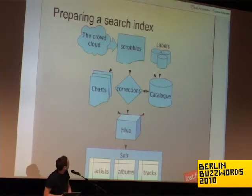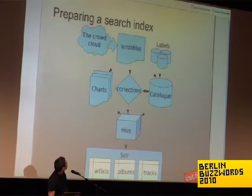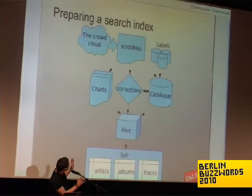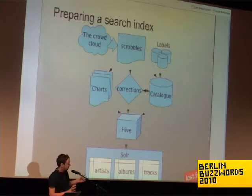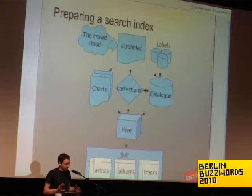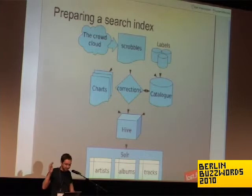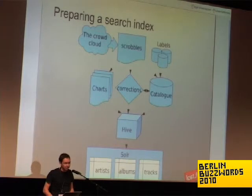This is a chart of the flow for building search indexes, which I work on. We have scrobbles as a source in a completely different format; we turn them into charts. Corrections and labels give us catalog information. We push all that in different formats into Hive and use Hive as an abstraction layer — an intermediate place to put things. Then we do a big join, pull out a massive list, put it in Solr, and we have a search index. It's just another tool that works well.